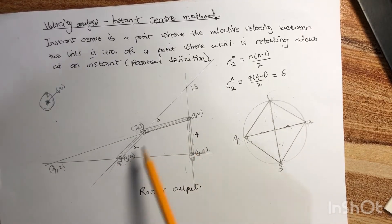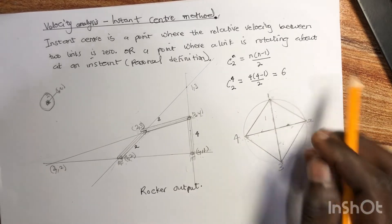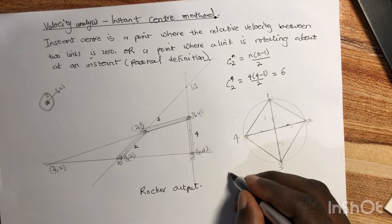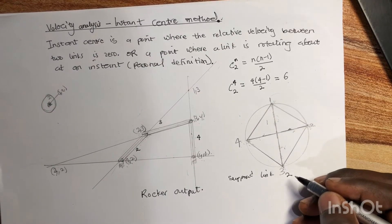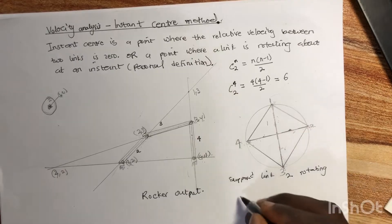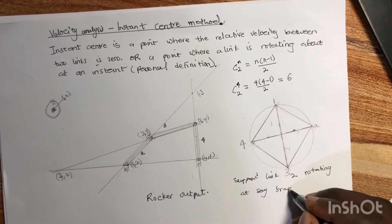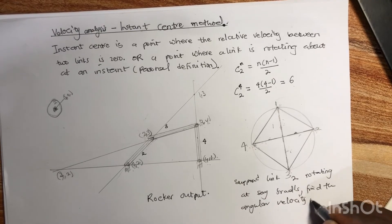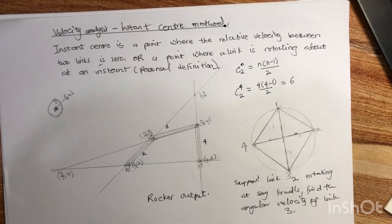Now that all instant centers are identified, consider a typical problem: suppose link two is rotating at five radians per second — find the angular velocity of link three. The problem diagram will include measurements between relevant instant centers needed for the calculation.